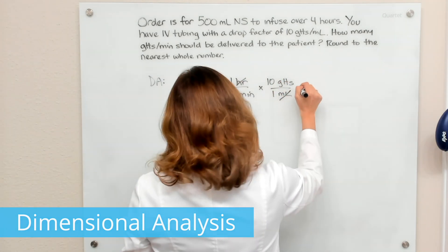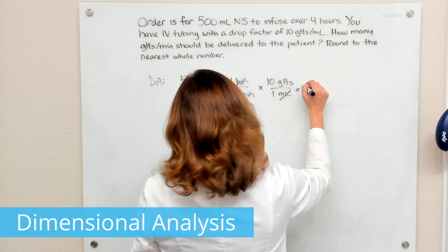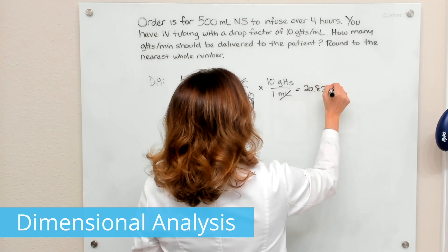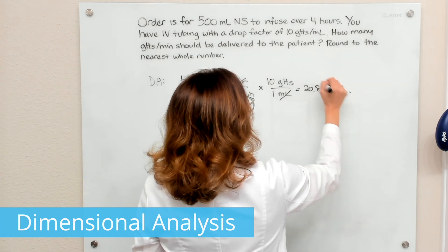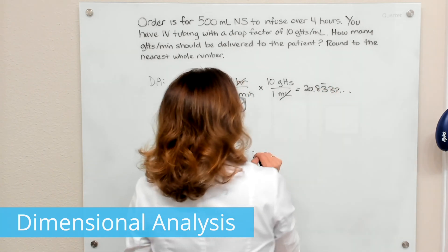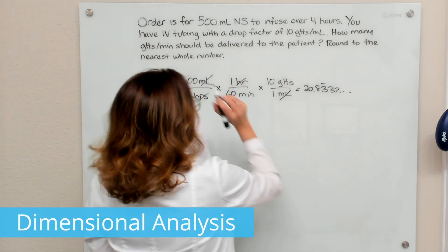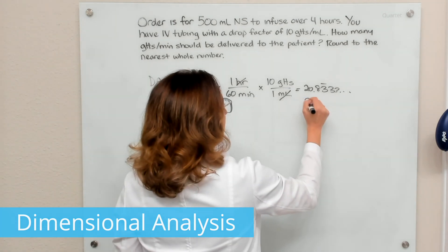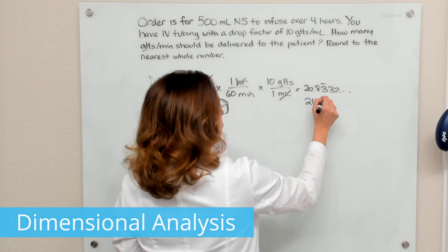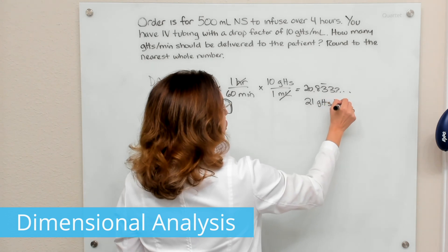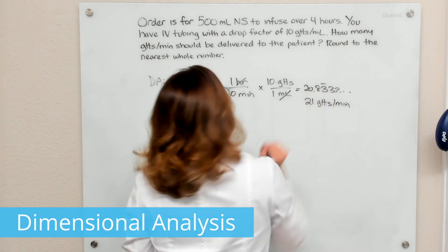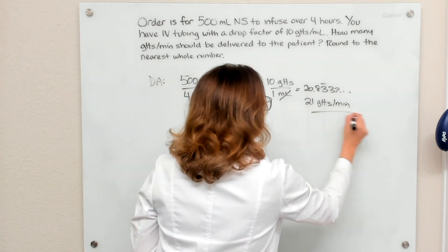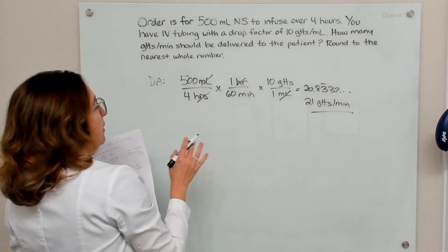Calculating that out gives 20.8333 repeating, which we round to the nearest whole number: 21 drops per minute. That is the answer using dimensional analysis.